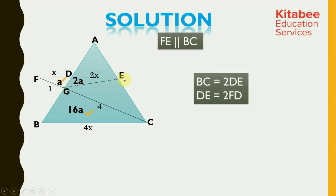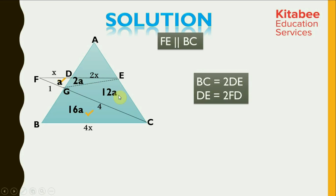If we consider the triangle FEC, then EG is a line that is dividing the base in the ratio of 1 to 4. So areas of triangle FGE and GEC must be in the ratio of 1 to 4. So GEC is 3A, and the area of triangle GEC would be equal to 4 times 3A, which is 12A units. Thus, area of FGE is 2A, area of GEC is 12A, and area of BGC is 16A.